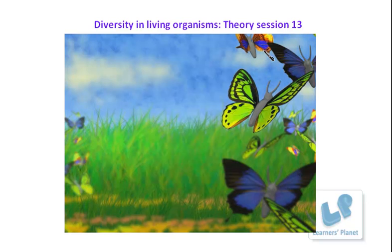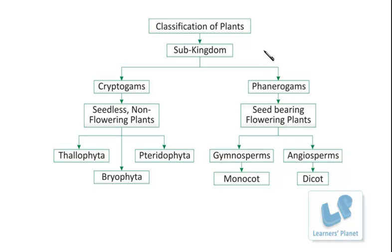We are going to continue with that only. I will just give you a brief reminder about kingdom Plantae, whatever we have discussed. The plants are classified on the basis of various features: the differentiation of body parts, development of vascular system, their seed bearing capacity, and how these seeds are present. According to that feature, these plants are further sub-classified.